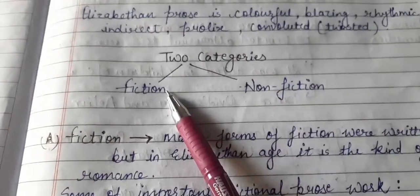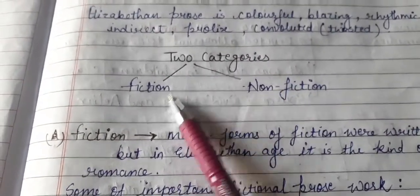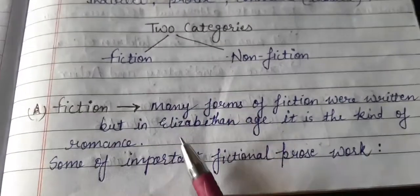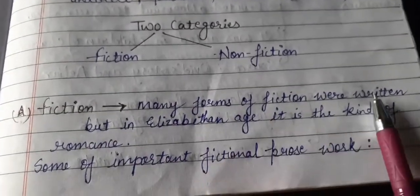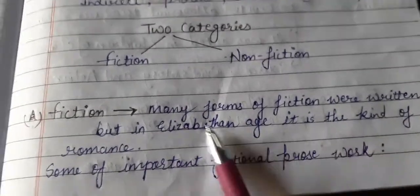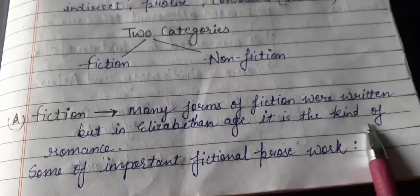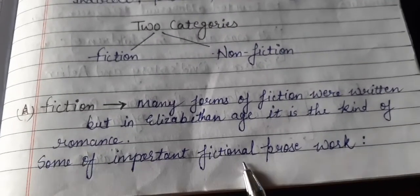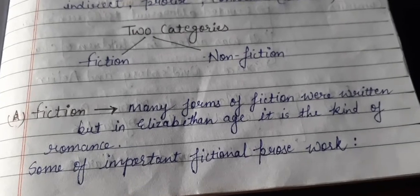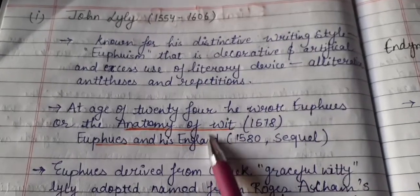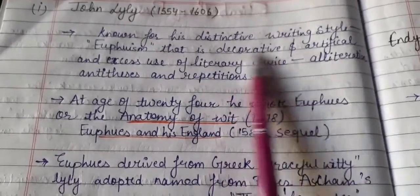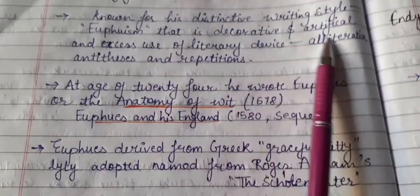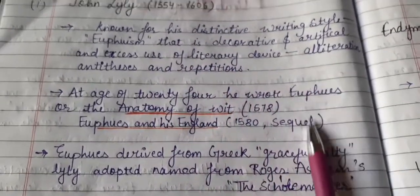Prose is divided into two categories: fiction and non-fiction. In fictional prose, we find many forms, but in the Elizabethan age it is the kind of a romance. Some important fictional prose works include John Lyly, known for his different writing style of Euphuism. It is a decorative and artificial writing style.